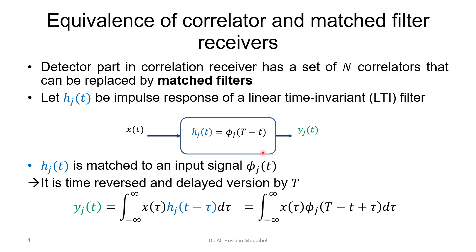The output y(t) is the convolution between the received signal and the impulse response of the matched filter. If we replace h(t) with its equivalent — the time-reversed and time-shifted signal — we get the following convolution equation. We are claiming that this output y(t) is equivalent to the correlator.